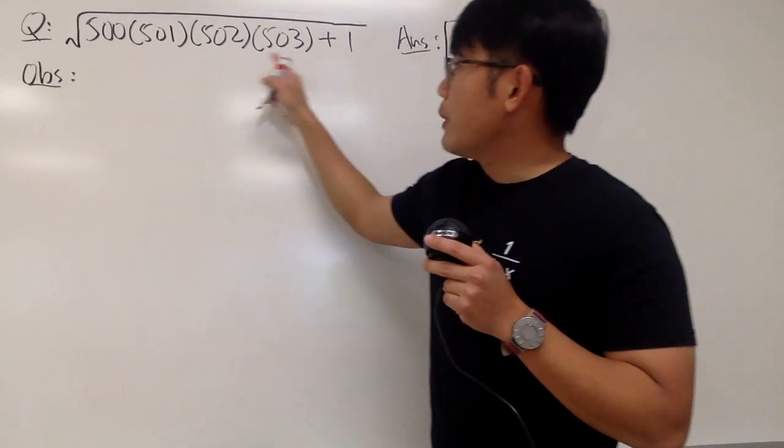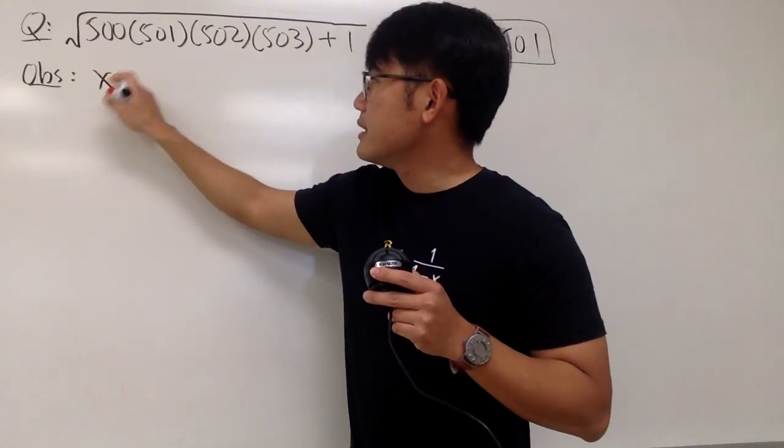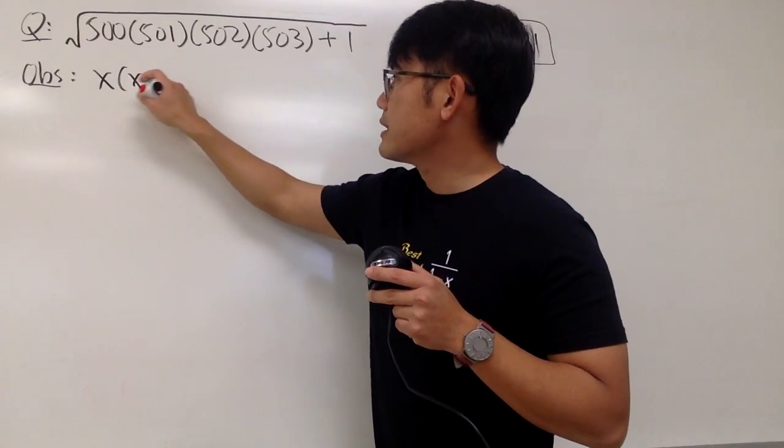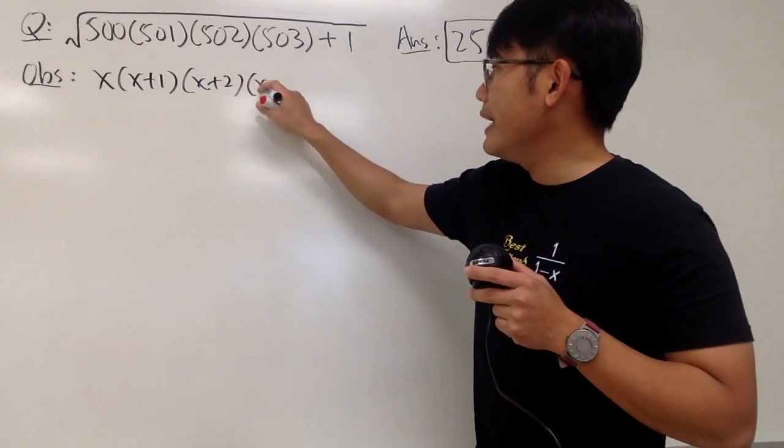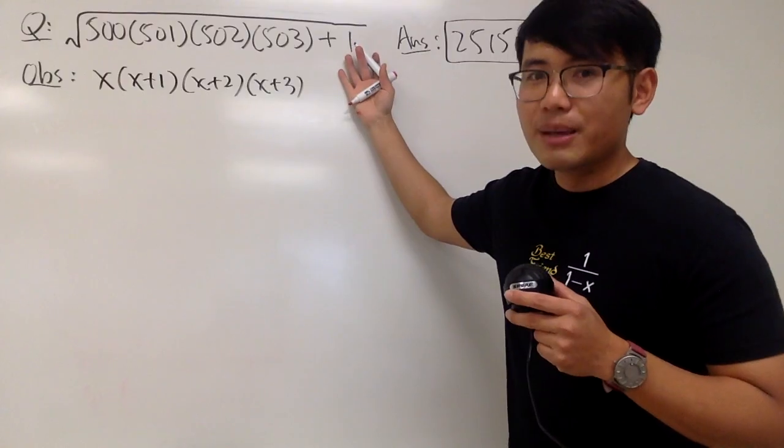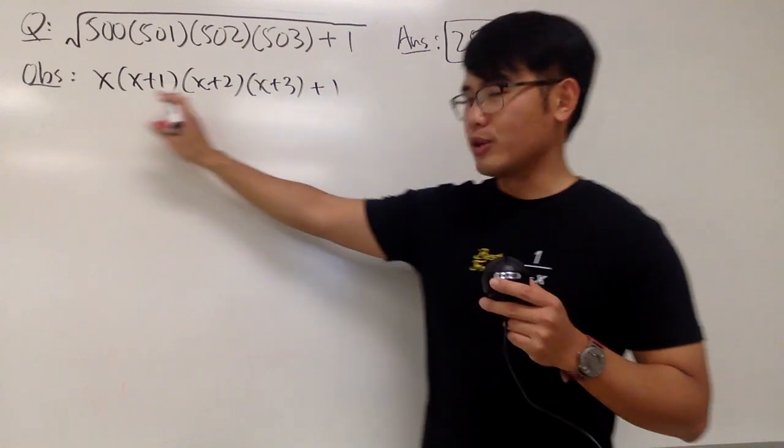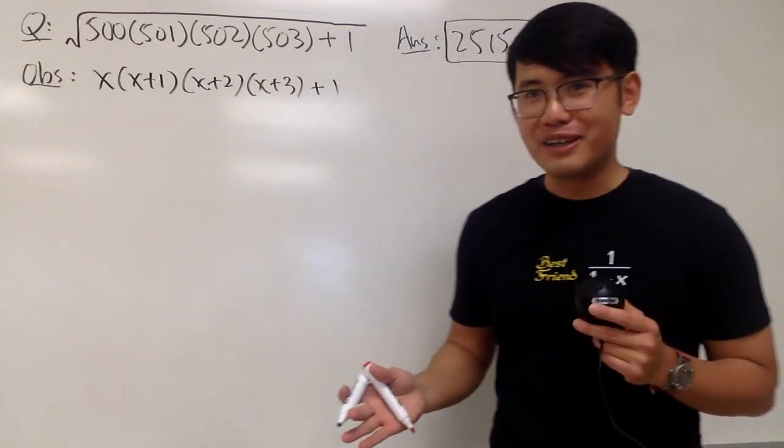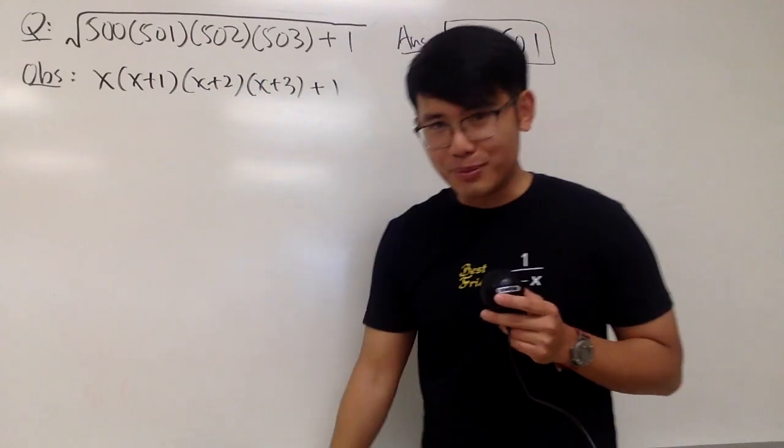First of all, notice that we do have a nice pattern right here. And if you call the first number to be x, the next number will be x plus 1, and then we have x plus 2, and this number will be x plus 3. And don't forget the plus 1 right here as well. And now, don't multiply this out in combinators entirely, because that would be just as bad as doing this by hand in the first place, right?